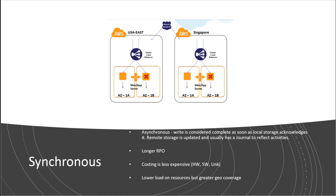Synchronous replication is more expensive. Asynchronous replication is basically a local-based acknowledgement. Generally, data is sent out and the target volume sends an acknowledgement before it's actually written in many cases. EMC and Hitachi handle things a little differently from each other.